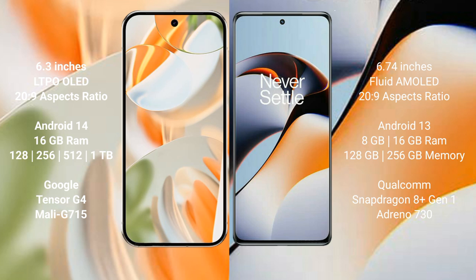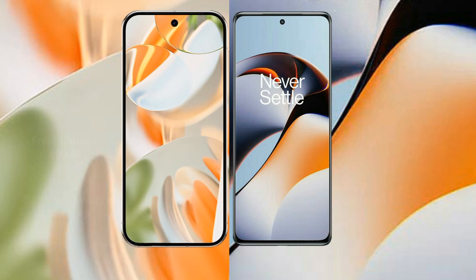The OnePlus 11R comes with 8GB or 12GB of RAM and internal storage options of 128GB or 256GB. It is powered by the Qualcomm Snapdragon 8+ Gen 1 processor.